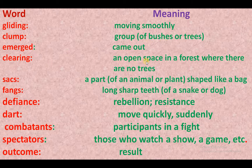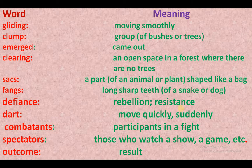Clearing — an open space in a forest where there are no trees. Sack — a part of an animal or plant shaped like a bag; kisi pashu ya plant ka hissa jo bag ki jaisi shape ka. Defiance — rebellion or resistance; chunoti. Dart — to move quickly and suddenly; achanak se ya teji se move karna.